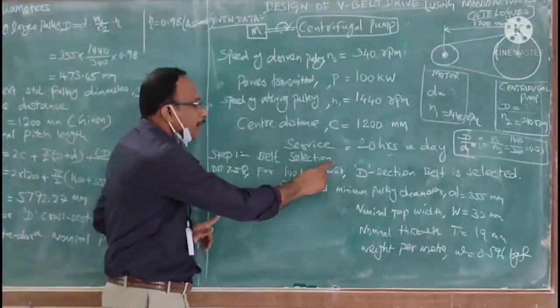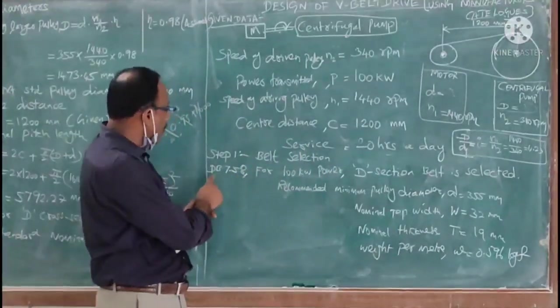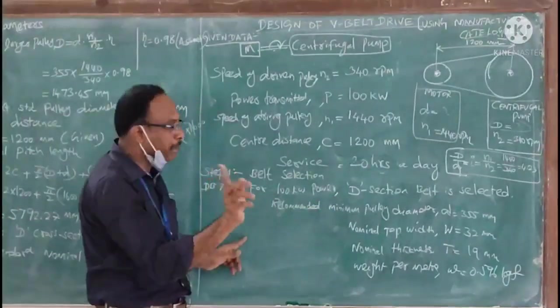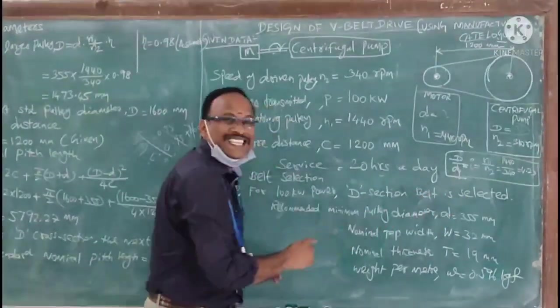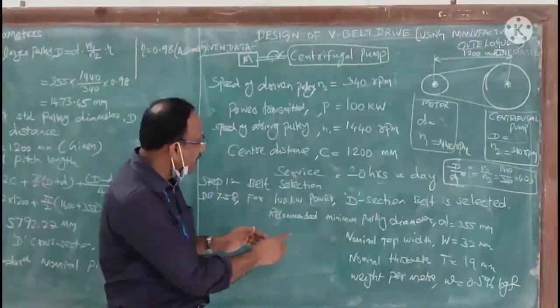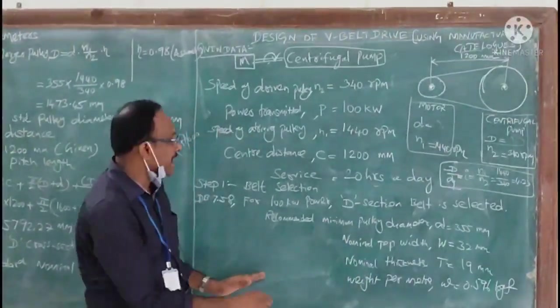Now we move to the step-by-step method for solving this particular problem using design data book. Step number one: belt selection. Refer the data book page number 7.58 for 100 kW power. The T section belt is selected.